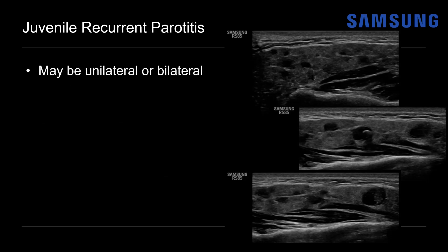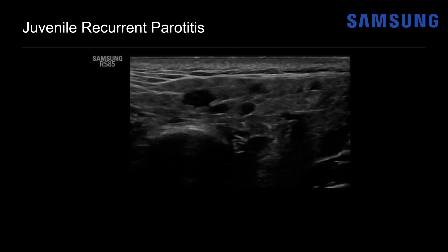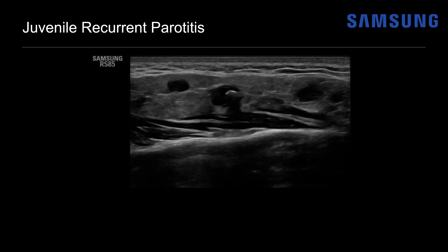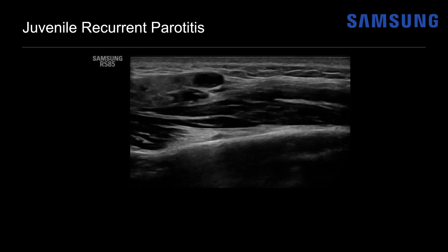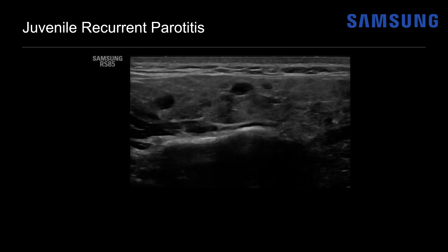It may be unilateral or bilateral. In this case, the patient did have bilateral disease, and it will have this typical appearance of multiple hypoechoic foci of salivary secretions scattered throughout the gland, possibly with small central calcifications. That's what can help you differentiate it from the pomegranate sign of acute parotiditis — the non-uniformity and the internal echogenic foci. Because this is a chronic recurrent process, the color Doppler appearance of the parotid gland may be normal. On real-time sagittal imaging of the right gland, you can get a better sense of how diffuse these non-uniform cystic foci are, with echogenic shadowing foci and irregular non-uniform cysts containing debris.